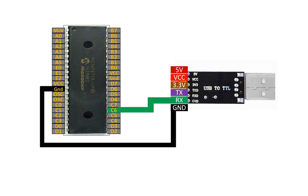For the RX pin, connect it to pin number 25 of the PIC, which is the TX pin of the PIC. So the TX pin of the PIC goes to the RX pin of the USB-to-TTL device. Similarly, the TX pin of the USB-to-TTL device connects to the RX pin of the PIC — TX to RX and RX to TX, simple as that. Our connections are now complete.